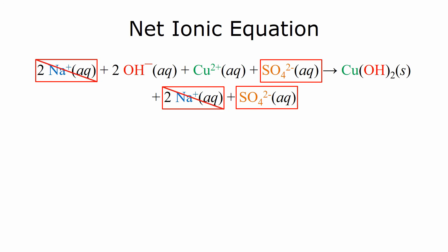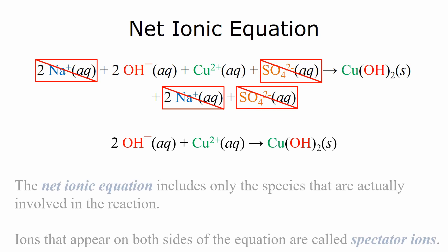So if they didn't actually do anything, they were not part of the reaction. So we don't include them in our net ionic equation. So that leaves us with two hydroxide ions plus copper two to form copper hydroxide, the solid. This is what's known as the net ionic equation. It only includes species that are actually involved in the reaction. Anything else is known as a spectator ion.